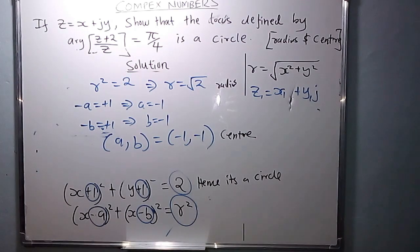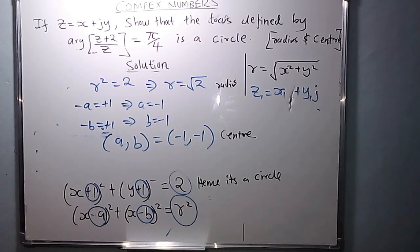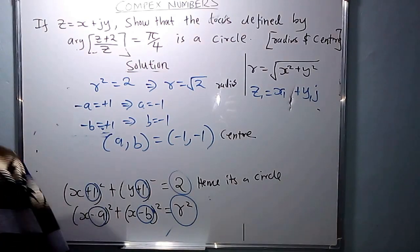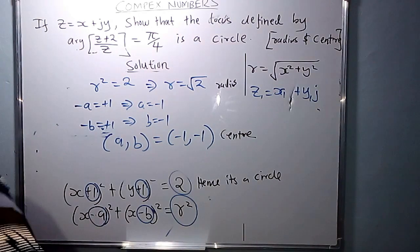That is how to determine the locus of an argument of a complex number. We define the locus to be a circle and determine its center and radius.